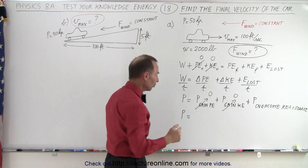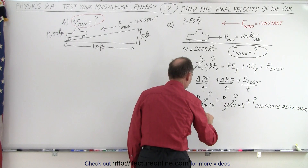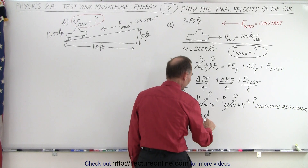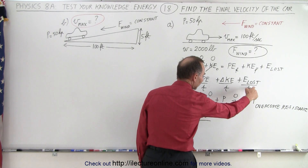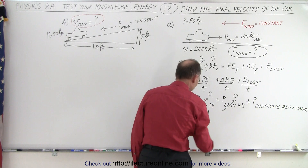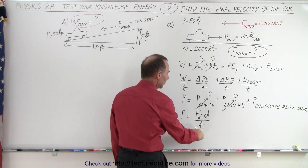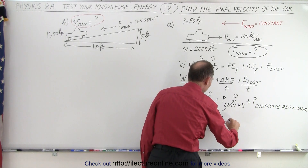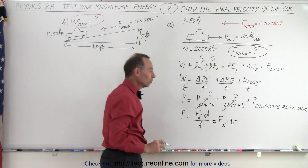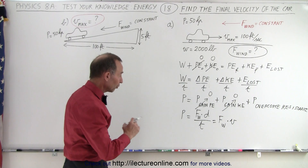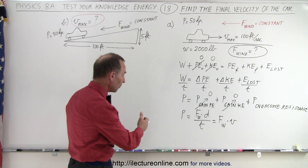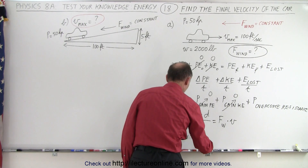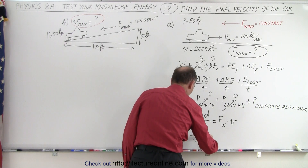The energy lost to overcome wind resistance is the wind force times the distance, divided by time. Distance divided by time is velocity, so the power equals the force of the wind times the velocity. Therefore, to find the force of the wind we simply take the power provided divided by the velocity.